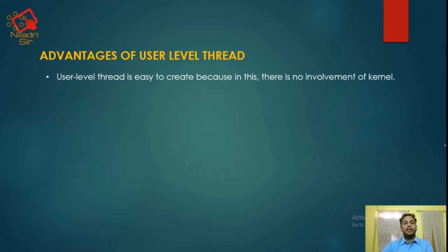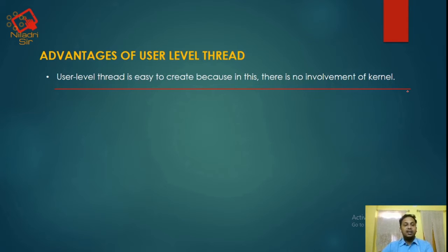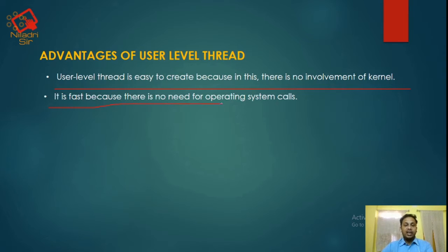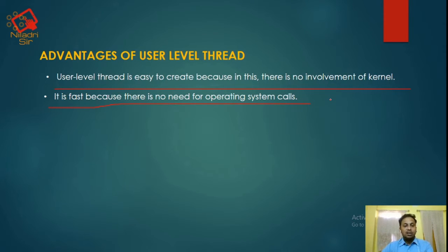What are the advantages of user-level threads? User-level threads are easy to create because there is no intervention of the kernel. Next, they are fast because there is no need for operating system calls. Operating system calls are not required, so it becomes much faster. As you know, operating system calls make threads slower.